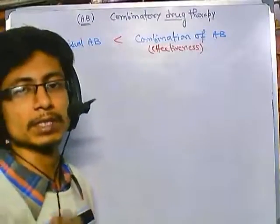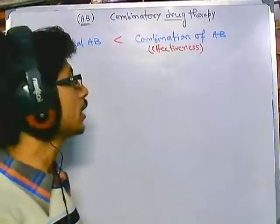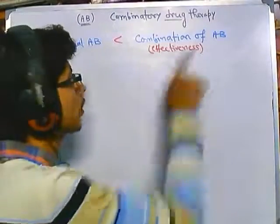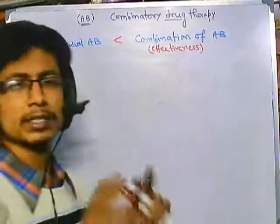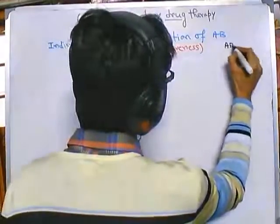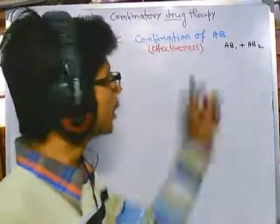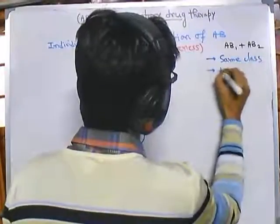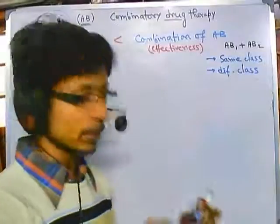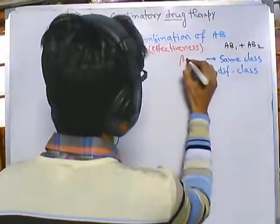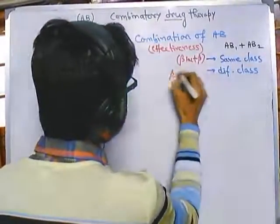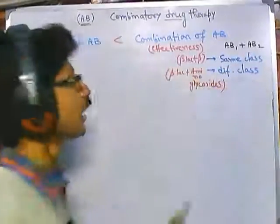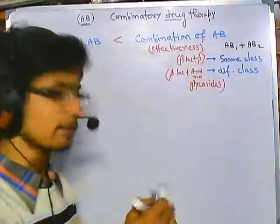There are certain infections, certain disease conditions inside the body where we have to take a combination of antibiotics — single antibiotic treatment won't resolve the problem. Usually the combination antibiotic treatment is simple: antibiotic one combined with antibiotic two. These two antibiotics can be of the same class — for example, two beta-lactam antibiotics combined — or of different classes, for example, beta-lactam with aminoglycosides.